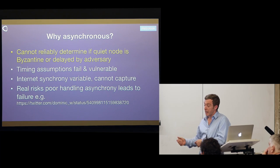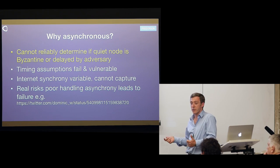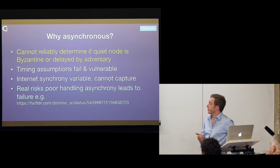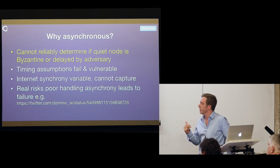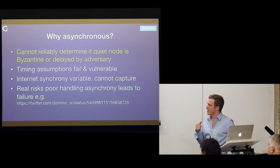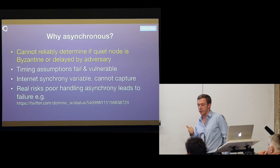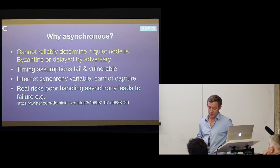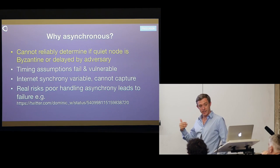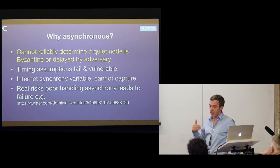I'm a big promoter of using asynchronous network models. How can you reliably determine if some quiet node has failed or is just delayed? Just because you haven't heard from a node doesn't mean you can assume it's failed — it may be delayed by an adversary, or it may be an adversary choosing not to send the message. Timing assumptions fail and create vulnerabilities. If you want to mathematically prove the validity of a consensus algorithm, it's very difficult to make synchrony assumptions because you can't really capture the internet — its speed is not uniform and highly variable. The failure of Stellar and the Ripple Consensus Protocol was actually predicted about three months before, due to poor handling of asynchrony. Bitcoin also has its own problems with asynchrony, which is why we have problems with centralization and selfish mining.